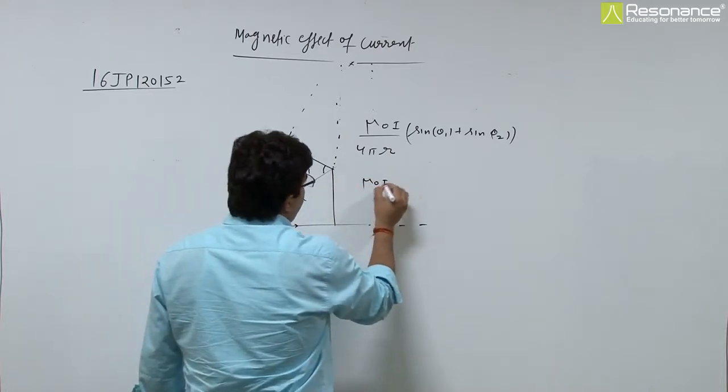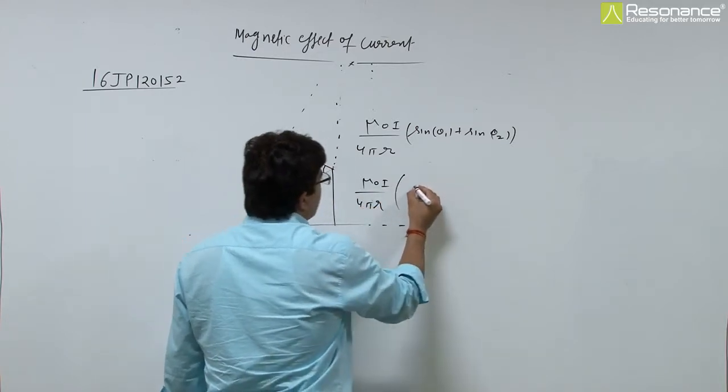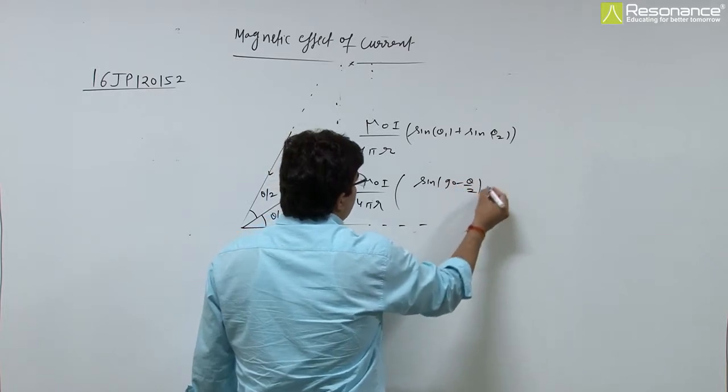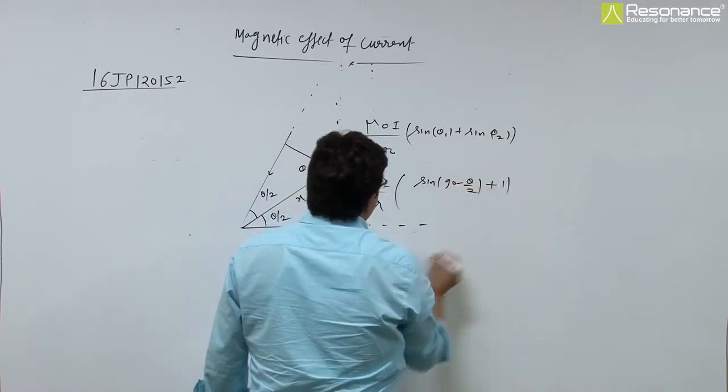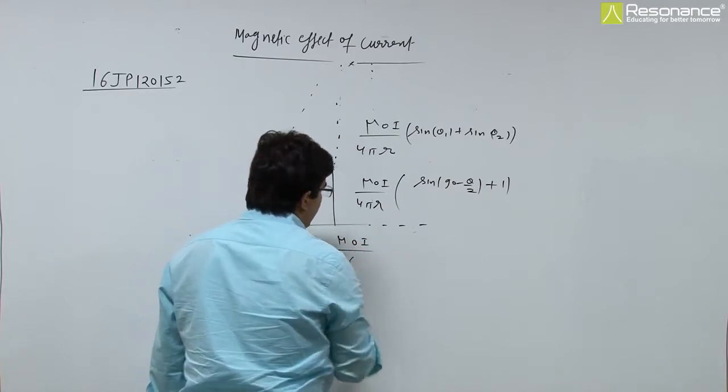So mu 0 i by 4 pi r times sin 90 minus theta by 2, which is 2 plus 1. So mu 0 i by 4 pi r.